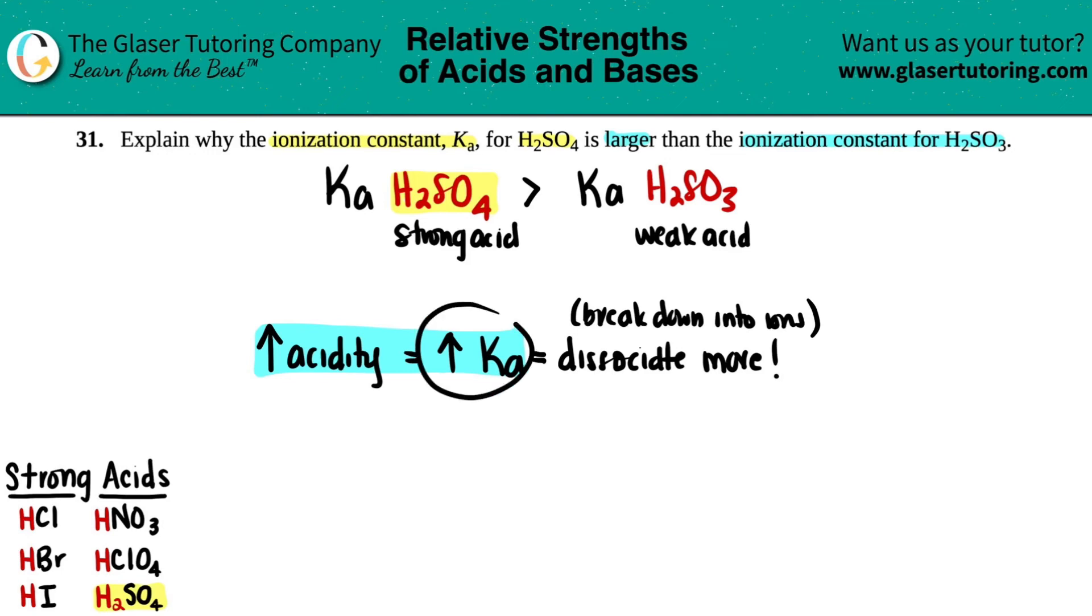So the higher the Ka, the more dissociation. And remember, strong acids will break down 100% into its ions. Weak acids will not dissociate 100%, and you will still have some H2SO3 left over. Now, you could say all of that as far as your explanation here.